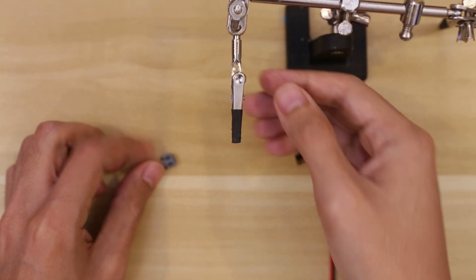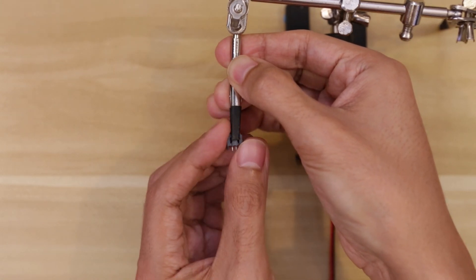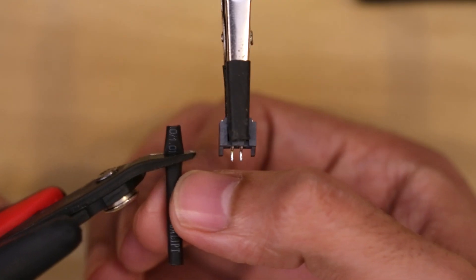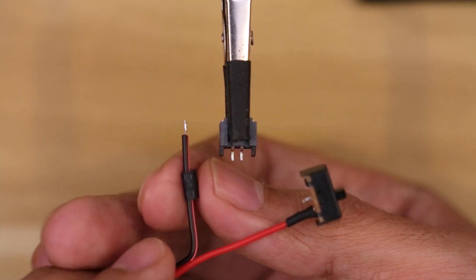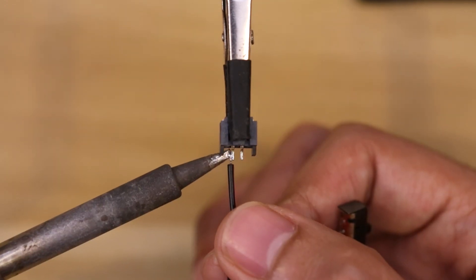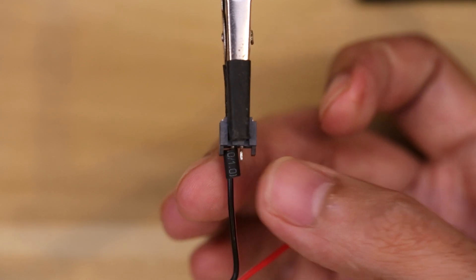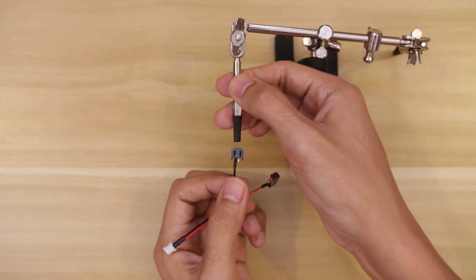Next I'll work on connecting the ground wire to the female JST connector so I'll secure it to the helping third hands. Again tinning the two electrodes with a bit of solder. Then I'll add yet another piece of heat shrink tubing this time to the ground wire. Now I can attach the wire to the electrode on the negative side of the female JST connector. After that I'll heat up the tubing to shrink it in place.